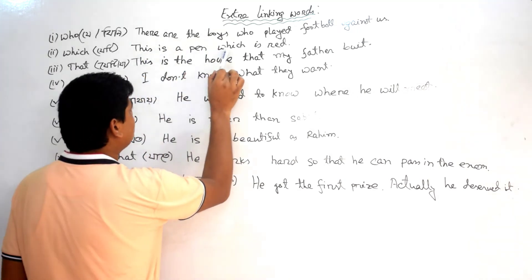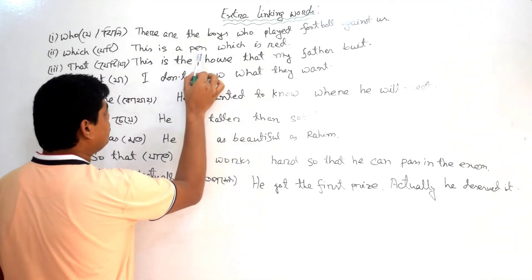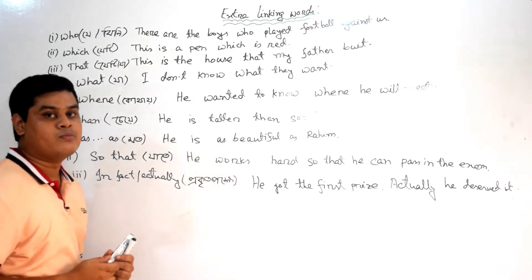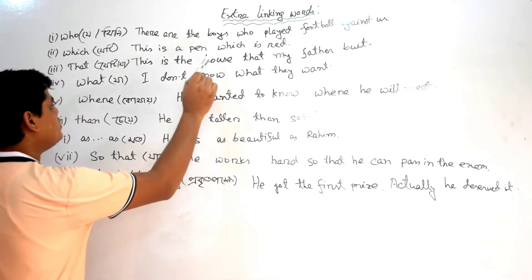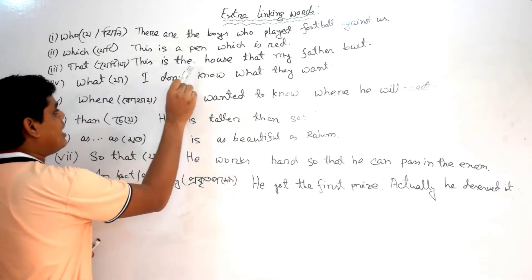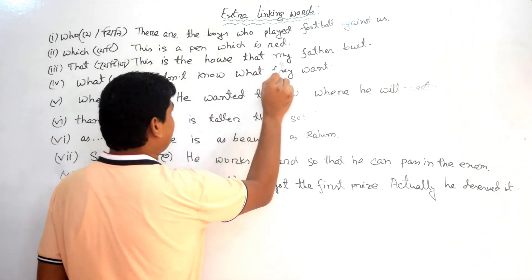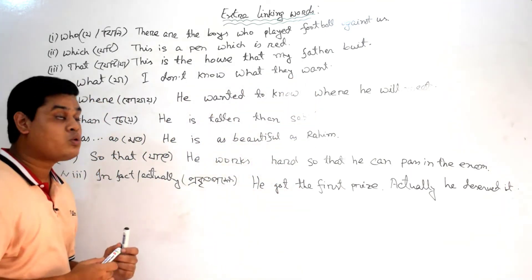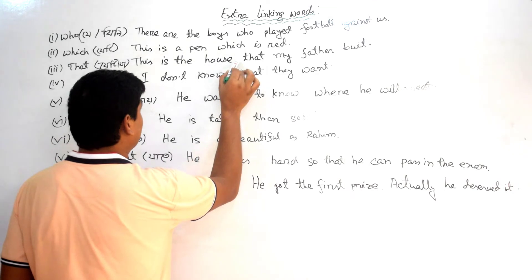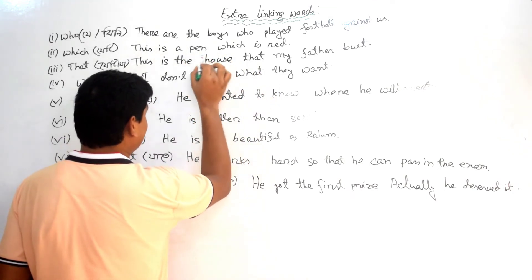This is a pen which is red. We will learn how to change that. This is a house where we can change the steps. If my father is in the house, it will be able to change the steps. We will learn how to change the steps later.